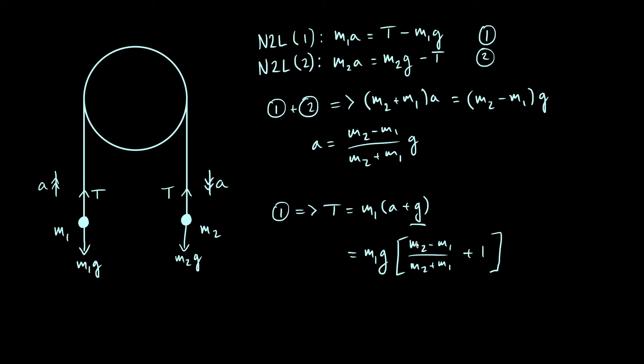Okay, so just one more step, we can simplify this bracketed term a bit. M2 minus M1 over M2 plus M1 plus one, well, if you think of this one as M2 plus M1 over M2 plus M1, you can see the numerator of our new fraction is going to be M2 minus M1 plus M2 plus M1. The M1s cancel, and you get 2M2 on the top, so putting that all together...